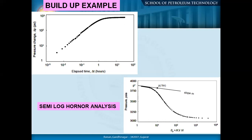Today we discussed conventional methods and the type curve — specifically the pressure change versus elapsed time. Next class we'll do both and try to get parameters, including the pressure type curve, the Gringarten type curve, and other types of type curves. So many types of type curves are there.